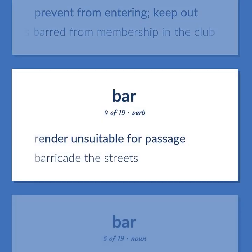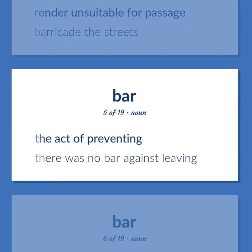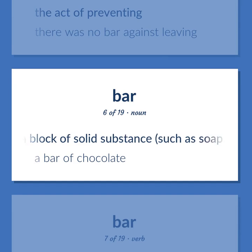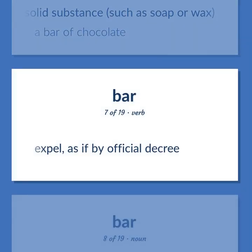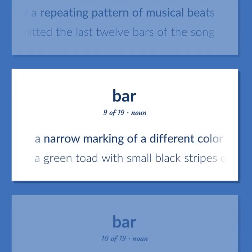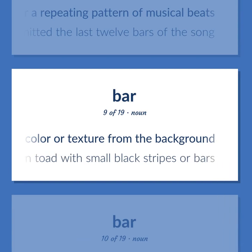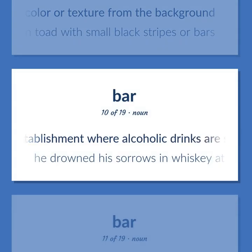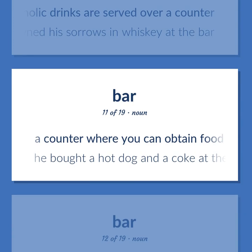Render unsuitable for passage. Barricade the streets. The act of preventing. There was no bar against leaving. A block of solid substance, such as soap or wax. A bar of chocolate. Expel, as if by official decree. Musical notation for a repeating pattern of musical beats. The orchestra omitted the last 12 bars of the song. A narrow marking of a different color or texture from the background. A green toad with small black stripes or bars. A room or establishment where alcoholic drinks are served over a counter. He drowned his sorrows in whiskey at the bar. A counter where you can obtain food or drink. He bought a hot dog and a coke at the bar.